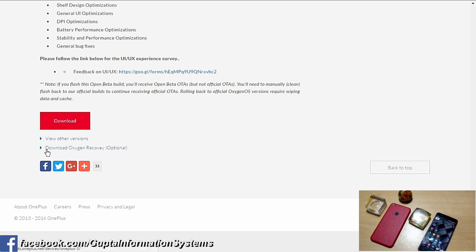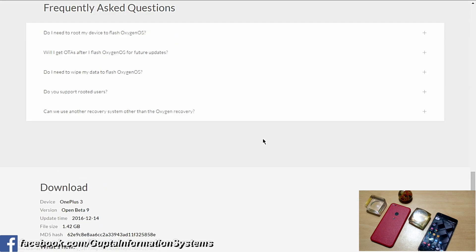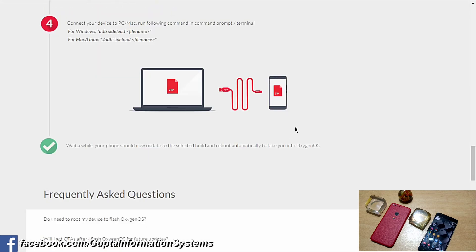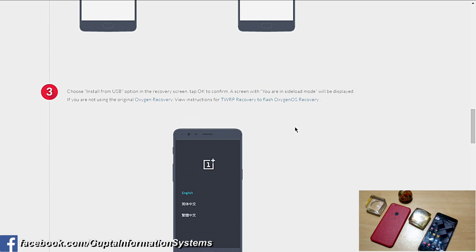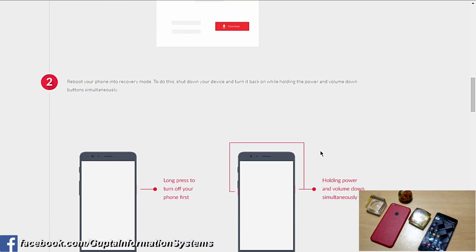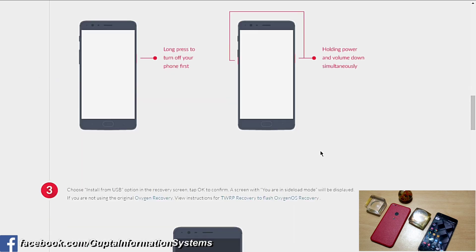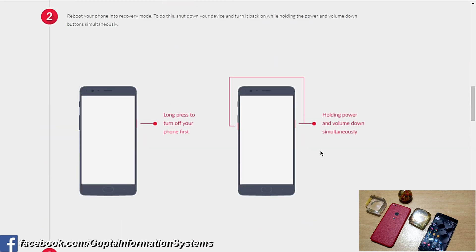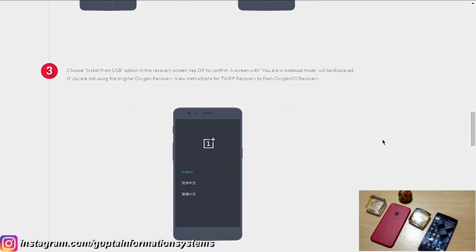You can see this optional OxygenOS recovery — you should download that, it's just a 21 MB file. First you need to power off your device, then you have to go to the bootloader. You can do this via ADB command also, or you can use the method of holding the power button and volume down simultaneously.